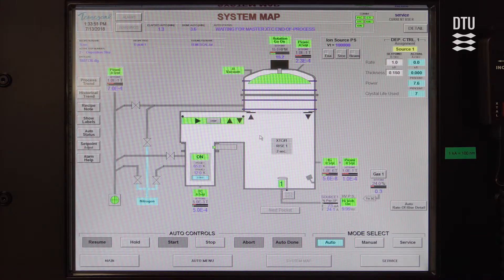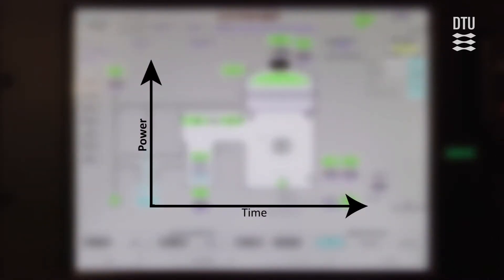So when we start the deposition, we first increase the power gradually so that we can increase the temperature of the material gradually. So we have a rise and a soak to increase the temperature somewhat. And then after soak one, we will have another rise and another soak where we are closer to the evaporation temperature so that we get the evaporation started before we open the shutter.